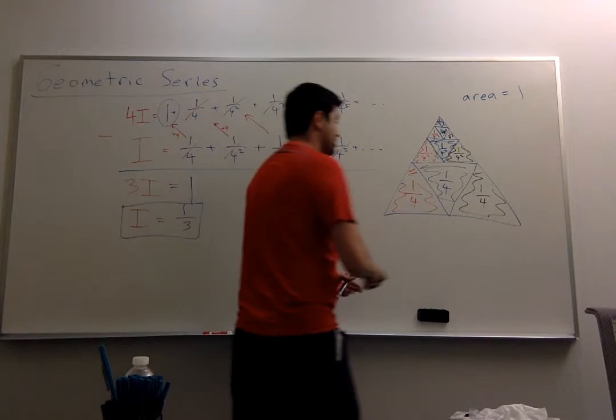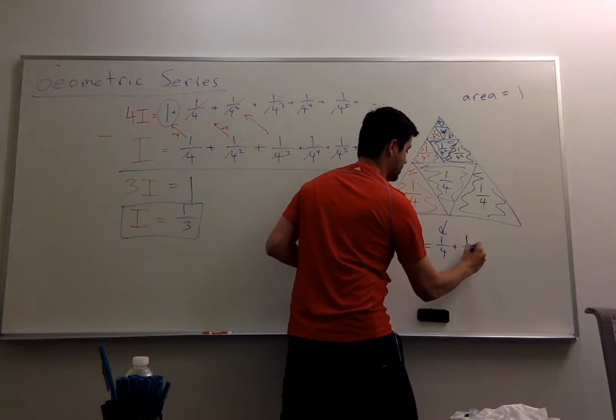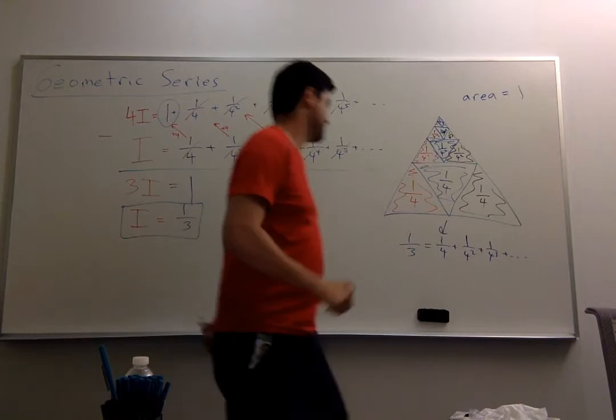In particular, looking at the middle, I have that 1 third of the area of the triangle is equal to 1 fourth, plus 1 fourth squared, plus 1 fourth cubed, and forever. This is a geometric way to see that 1 third is equal to this infinite sum.